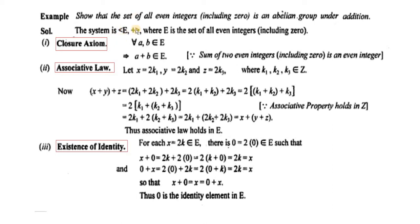First of all we will check the closure property. For any two even integers a, b, a plus b will also belong to E — that is, the sum of two even integers including 0 is an even integer. Thus addition is a binary operation for the set of even integers.